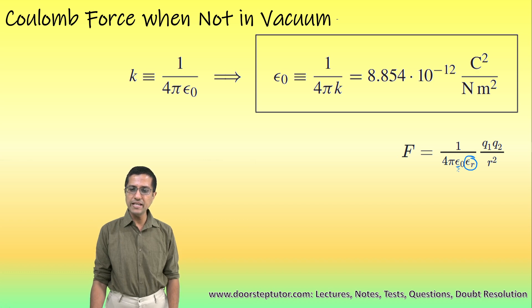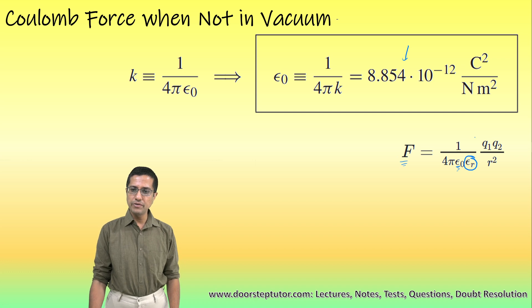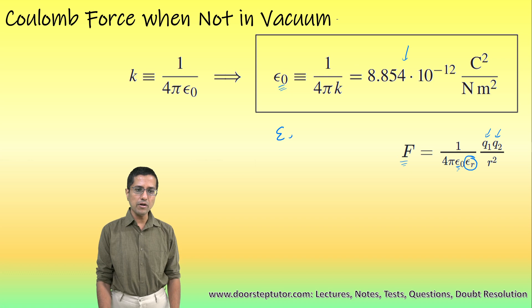So this epsilon naught is the absolute permittivity of vacuum and this is just a constant. This is the force which is experienced by these two particles q1 and q2 when placed in vacuum. This epsilon r for vacuum is equal to 1.